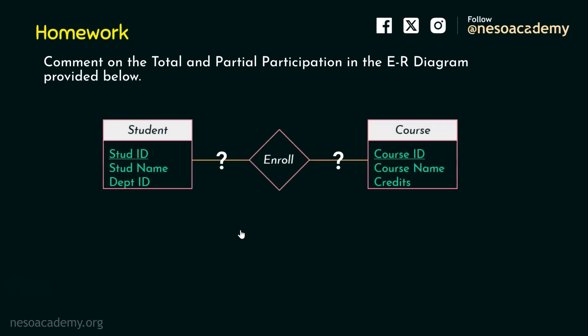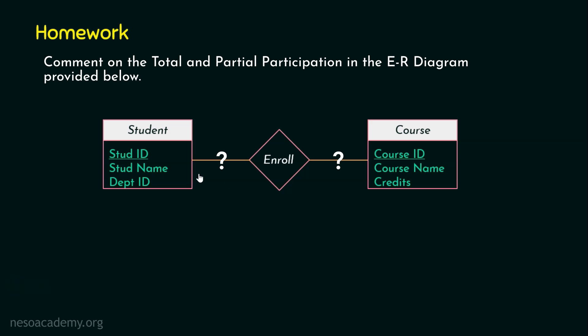Now for the homework question: you can see a student entity and a course entity, with the relationship being enrollment — students enroll in courses. Both entities have some attributes. Looking at this diagram, identify the total and partial participation of the student entity and the course entity, and please post your answers in the comment section. I hope the session was informative — thank you for watching.